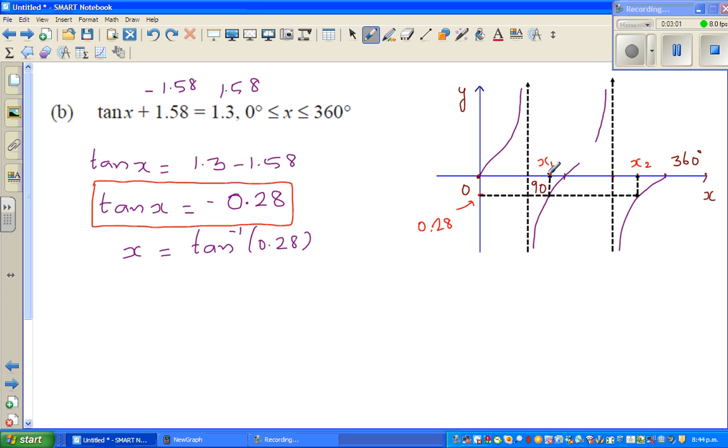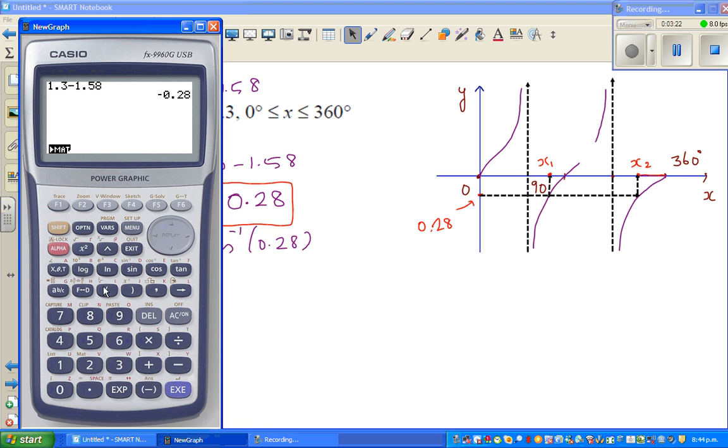The question is how to find these two values. When you press tan inverse of negative 0.28, the calculator will give you this angle in a negative form. The negative angle means you're going backwards from 360. This is the answer the calculator is going to give you. First, you should set your calculator on degrees. If you press shift tan of negative 0.28, that will give you negative 15.6. That means negative 15.6 degrees.